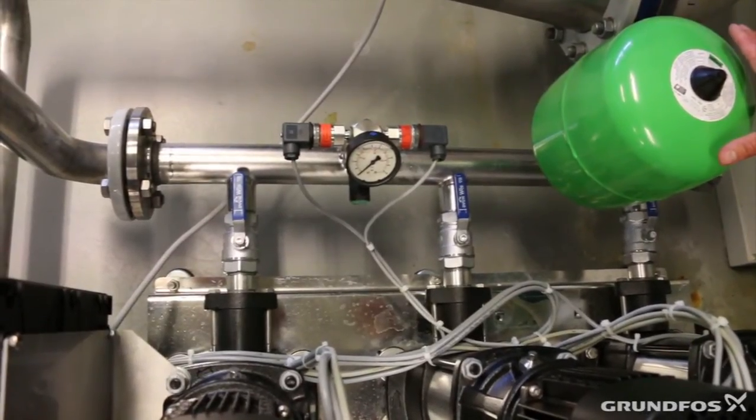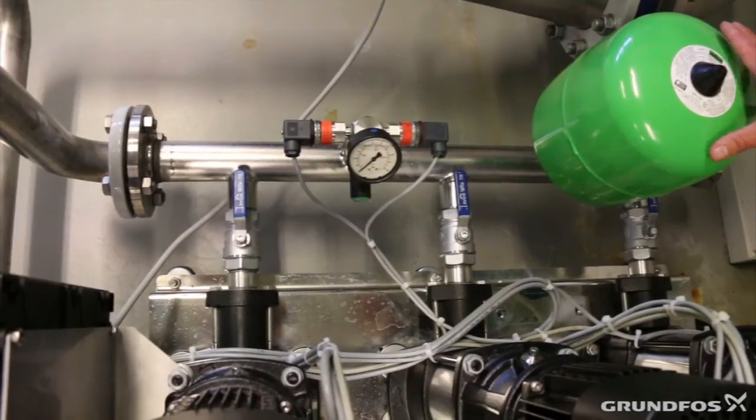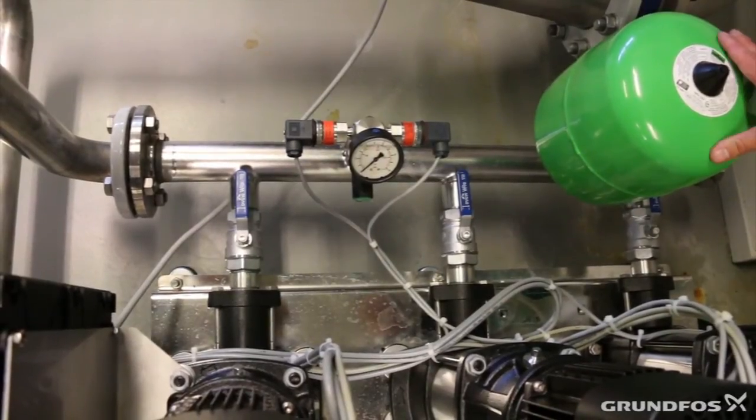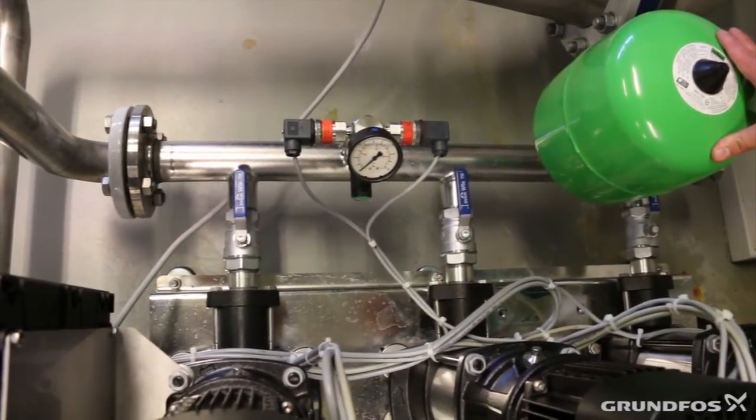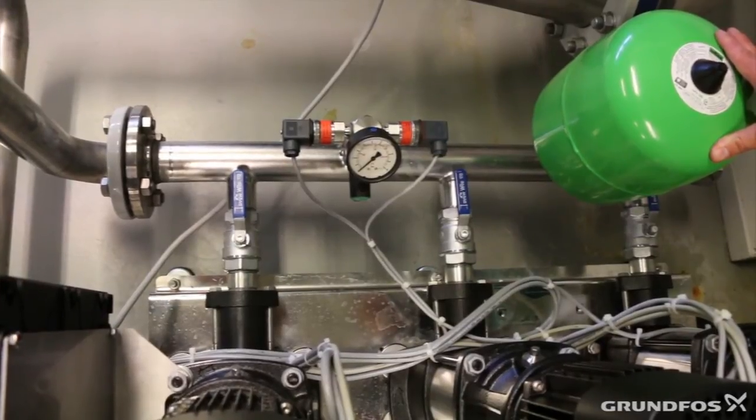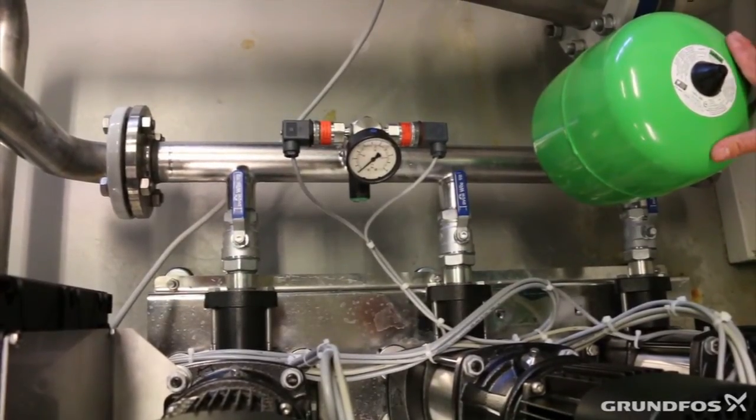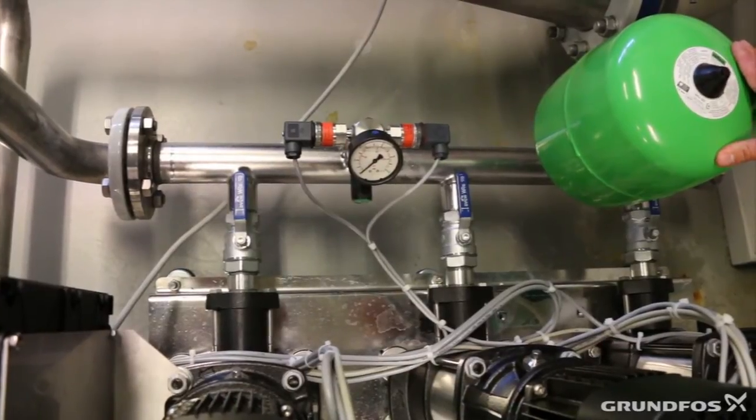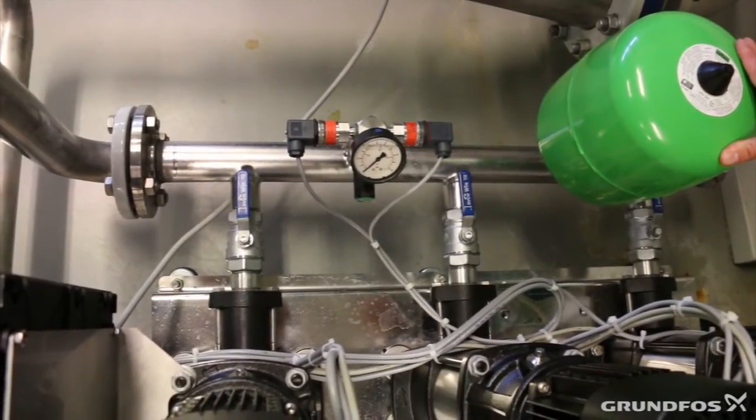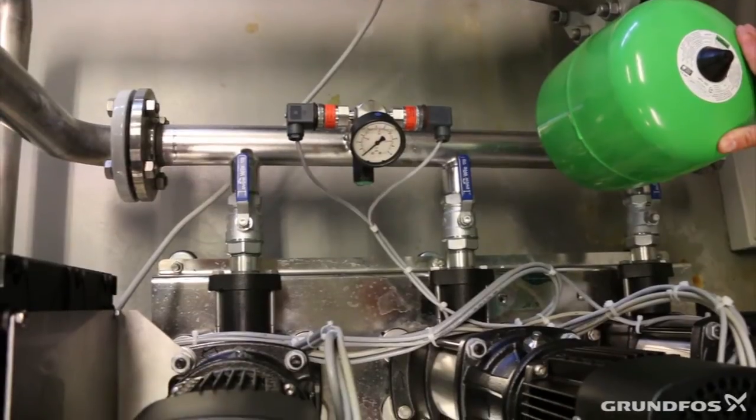So we have a given amount of water, a water volume in this vessel. It is pressurized and if the pumps are off and there is a need for water, we will first empty this vessel and if this is empty and the pressure is dropping down in the system, then the pumps will start and go up in speed.